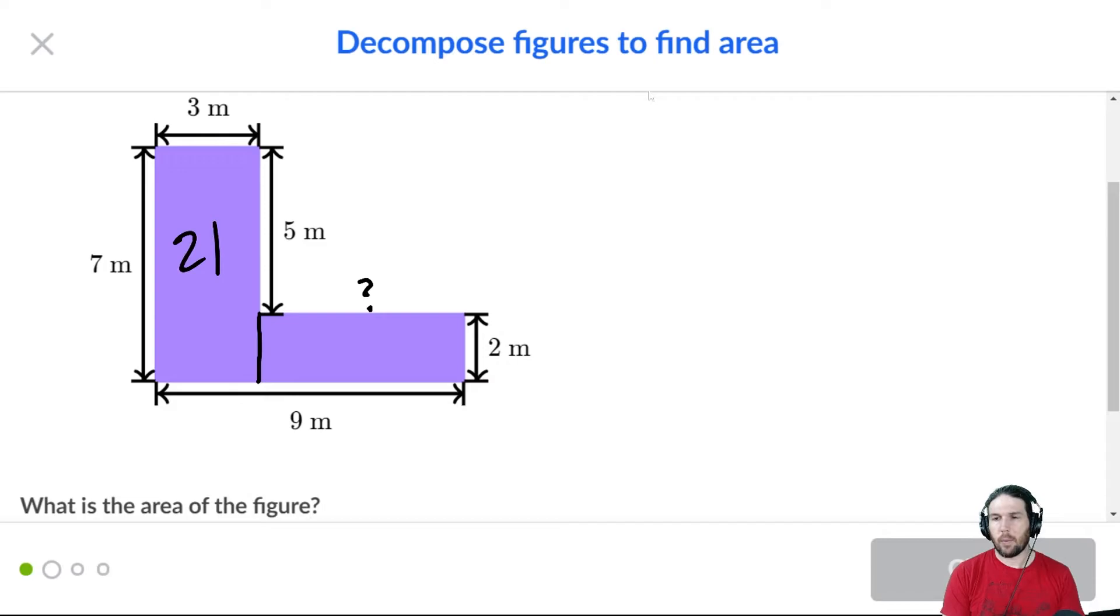So how do I find that width? Well, I have to be able to say, oh sure, that makes sense. I've got a length of nine here. But this bit is three, right? Because it's a rectangle. So this bit here must be six meters.